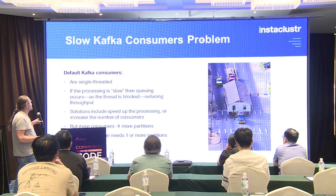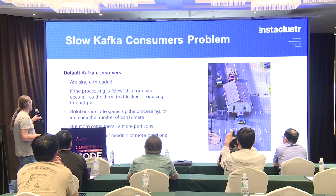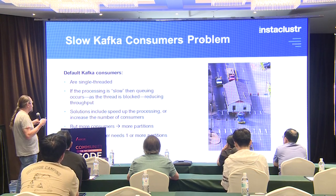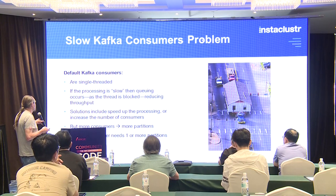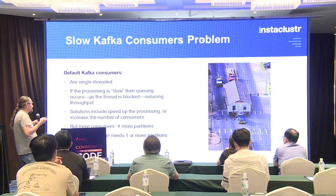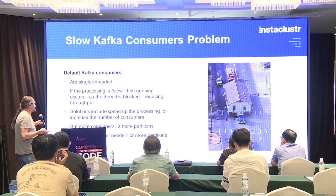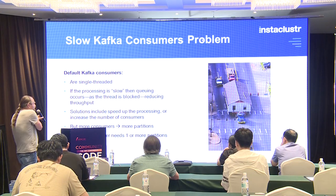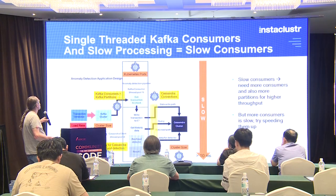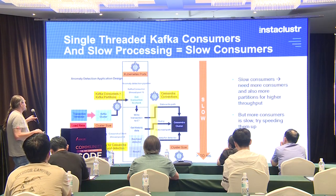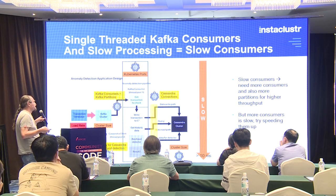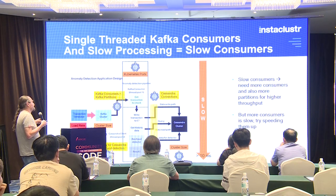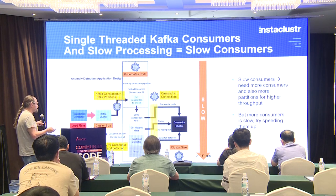The problem was the slow Kafka consumers. The default Kafka consumers are only single-threaded. If the processing in each thread is slower, queuing occurs as the thread is blocked, reducing throughput. Solutions include speeding up the processing or increasing the number of consumers — the typical approach. But the more consumers you have, the more partitions you need, as each consumer needs one or more partitions. Single-threaded Kafka consumers plus slow processing equals slow consumers. So slow consumers mean you need more partitions for higher throughput — but more consumers is actually slow, so try speeding them up.